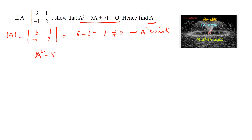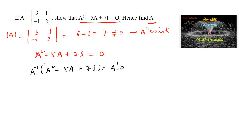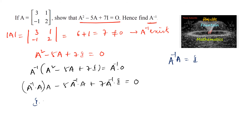From the equation A squared minus 5A plus 7I = 0, let us pre-multiply by A inverse. So A inverse times (A squared minus 5A plus 7I) = A inverse times 0. We can write A inverse × A squared as (A inverse × A) × A = I × A = A, and A inverse × A = I.